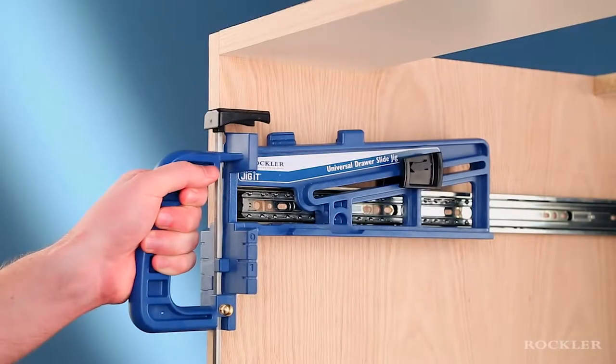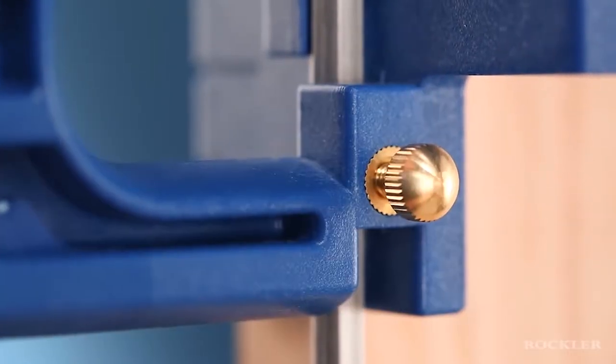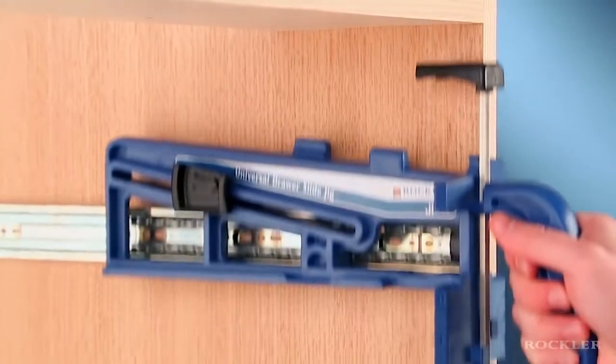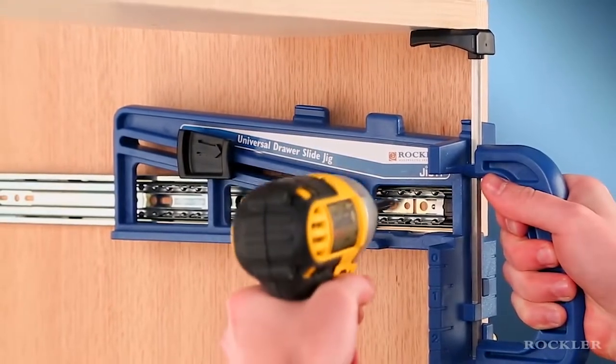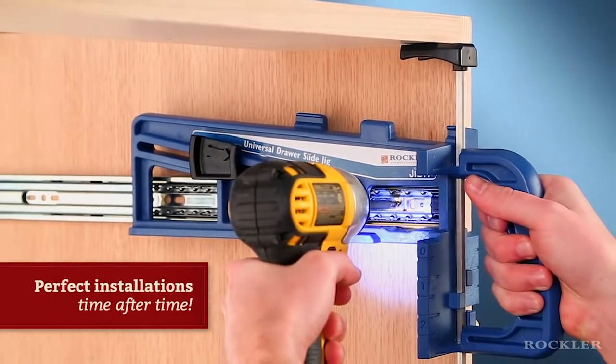When you've got the slide located precisely, slide the indexing rod until the plastic foot makes contact and lock it in with the brass knob. At the next installation site, just butt the foot of the indexing rod against the reference surface to position the jig at the right height. You'll get perfect installations time after time.